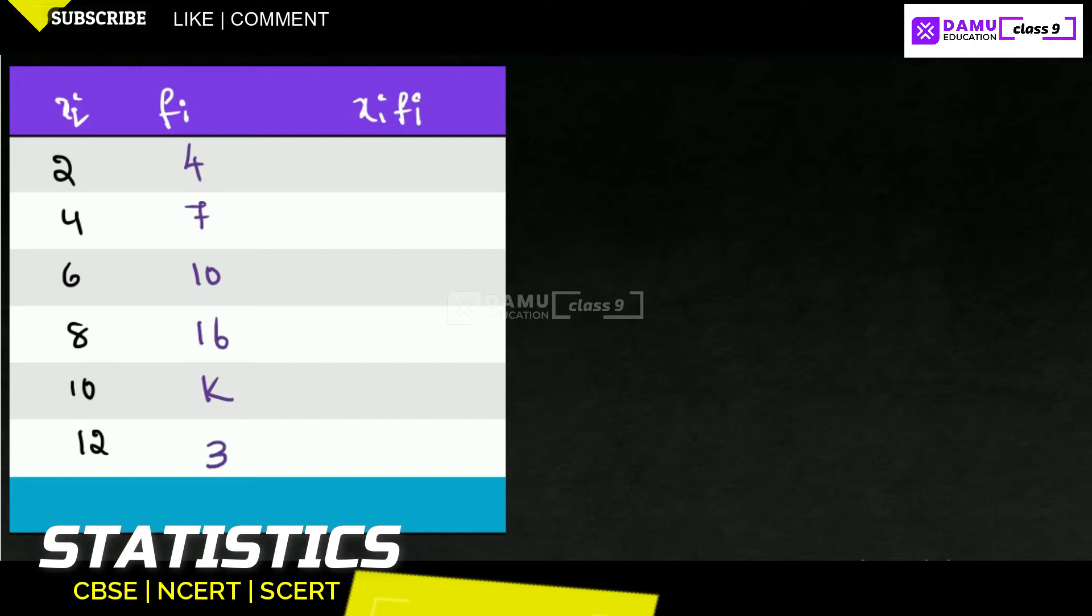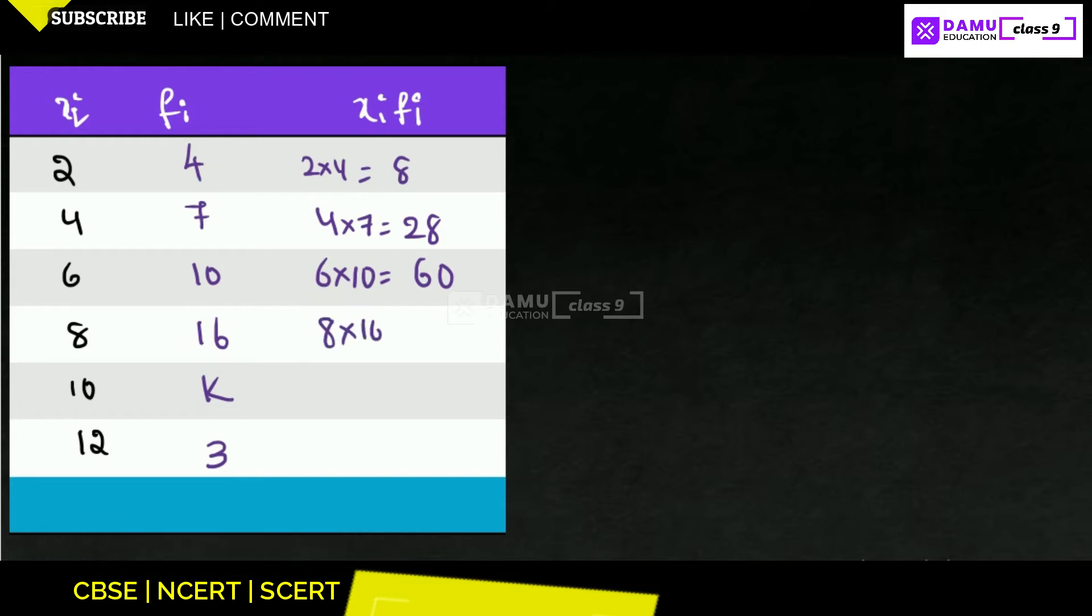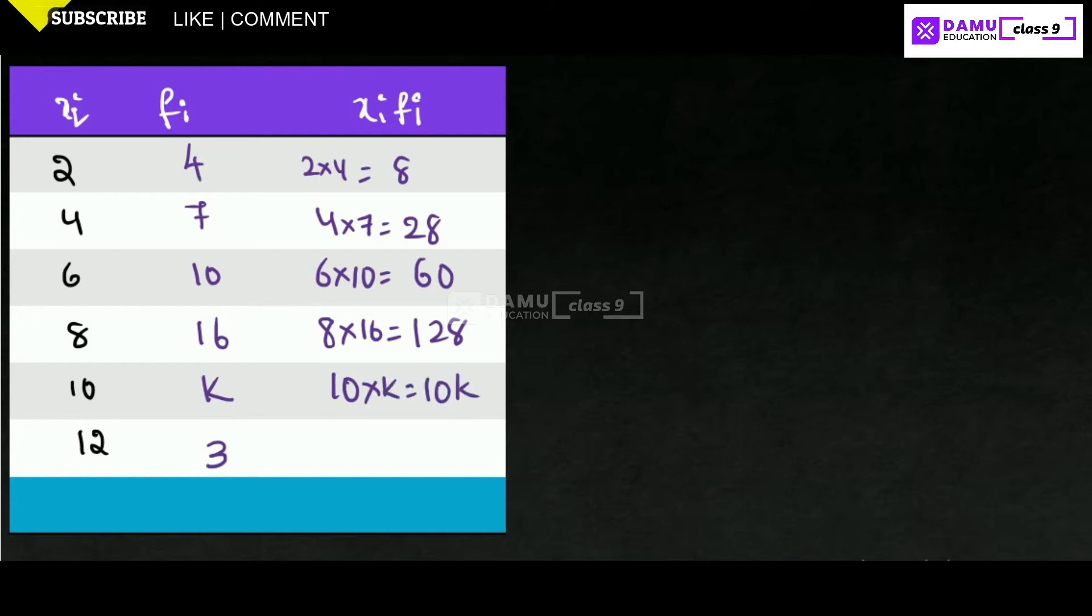If you multiply all this, 2 into 4, 2 fours are 8. 4 sevens are 28. Again 6 into 10, 60. Then 8 into 16 will be 128. Then 10 into k, that is 10k. Then 12 into 3, 36.